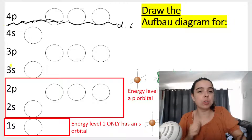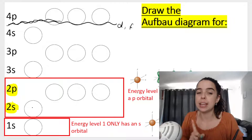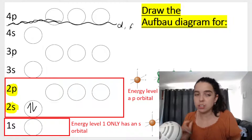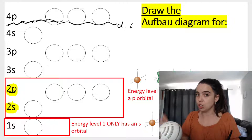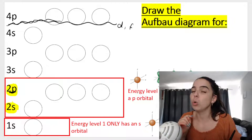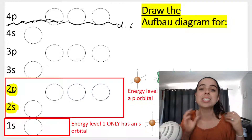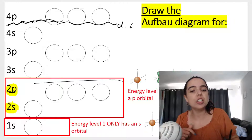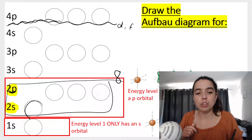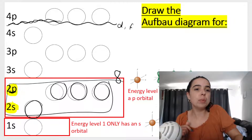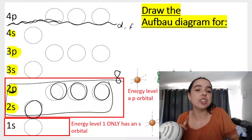Then we've got energy level two with a 2s orbital — remember the s orbital can only hold two electrons — and then we've got the p orbital. The p orbital is made up of three circles, each circle can hold two electrons, so the p orbitals in total can hold six electrons. That means energy level two in total can hold eight electrons. Then we've got energy level three, which also has an s and a p orbital, and energy level four.